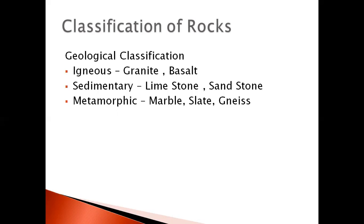Sedimentary rocks — we have the word 'sediment' — these rocks are formed layer by layer due to the deposition of small particles. This type of rock is called sedimentary rock. Examples of sedimentary rocks are limestone and sandstone.